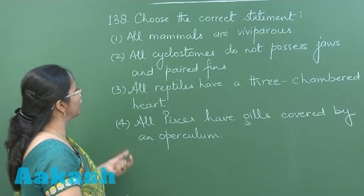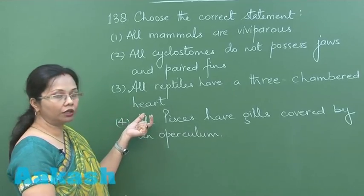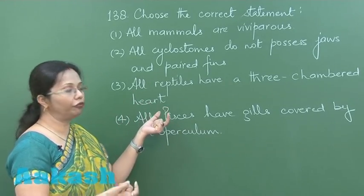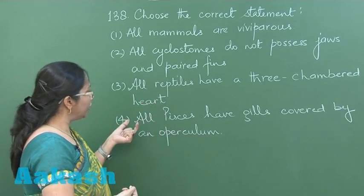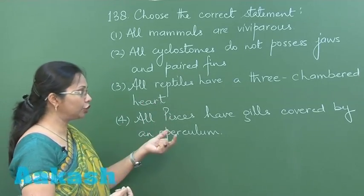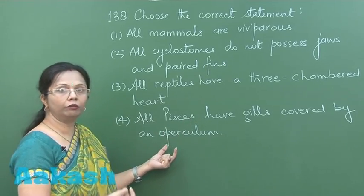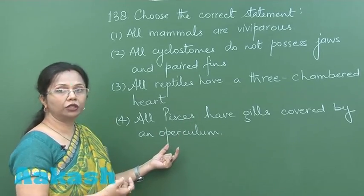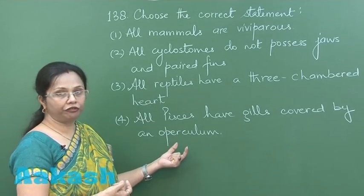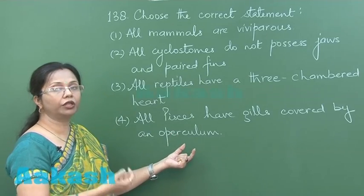The statement that all reptiles have a three-chambered heart is also incorrect, because crocodiles have a four-chambered heart. Then, all pisces have gills — that is true — but all piscean gills are not covered with operculum, because the presence of operculum is a character of bony fish. In cartilaginous fish, the operculum is absent.